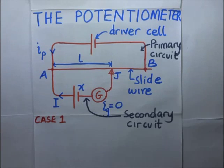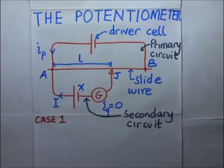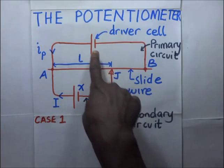A potentiometer is an instrument designed to measure an unknown voltage by comparing it with a known voltage. The known voltage may be a standard cell or any other known voltage reference source. In all cases, the unknown PD or unknown voltage is compared with the potential difference across the slide wire.